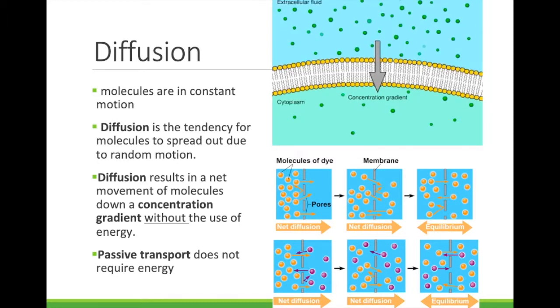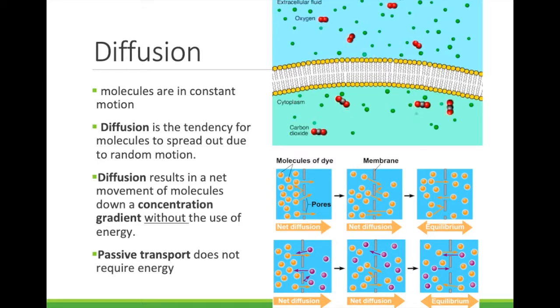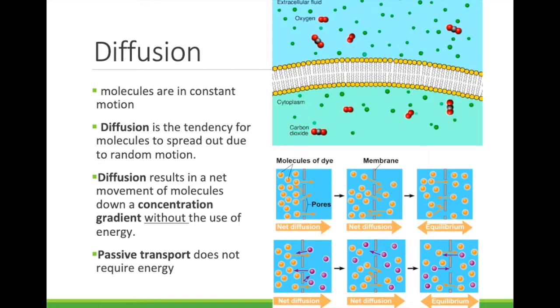Diffusion is the tendency for particles of any kind to spread out from where they are more concentrated to where they are less concentrated. This process can also be described as molecules moving down their concentration gradient. Diffusion across a biological membrane is called passive transport, since the cell expends no energy to move the molecules. Oxygen and carbon dioxide molecules move into and out of cells by passive transport.